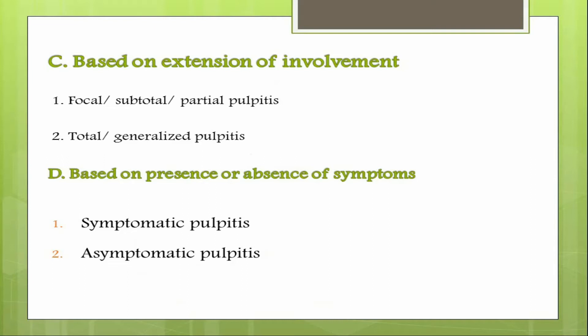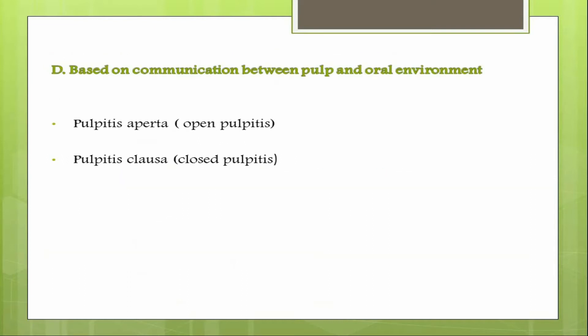Based on the presence or absence of symptoms, pulpitis can be classified into symptomatic and asymptomatic pulpitis. Based on communication between the pulp and oral environment, it can be classified into pulpitis aperta or open pulpitis, where there is communication between the pulpal and oral environment, and pulpitis clausa or closed pulpitis, where there is no such communication.